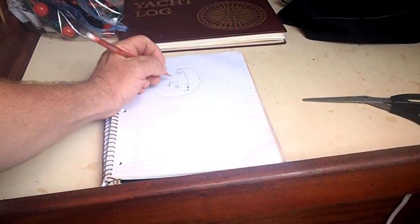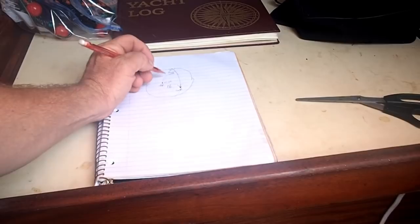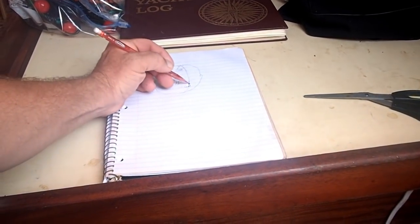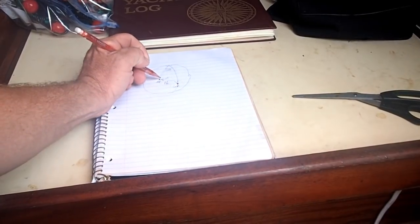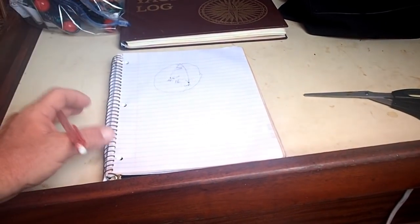Now, step two is, once we have our computed altitude from this triangle, we can get the direction that the sun, the GP, should have been on the Earth's surface from us. We can get a true bearing.